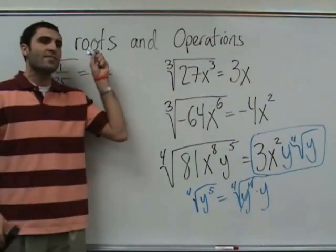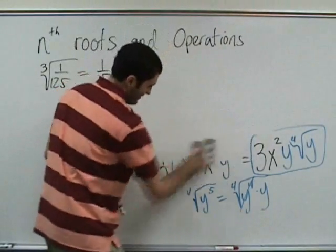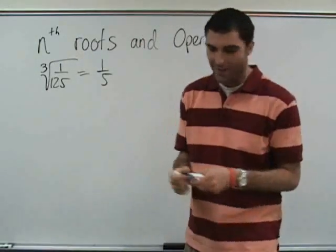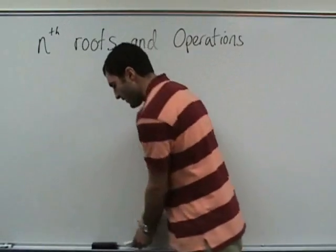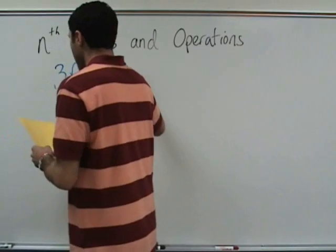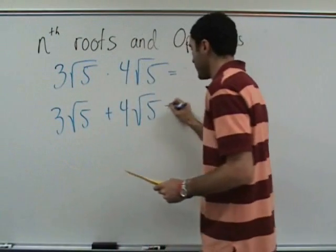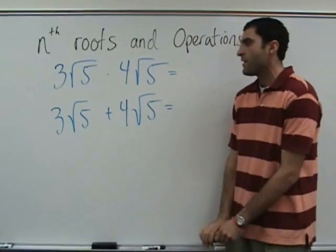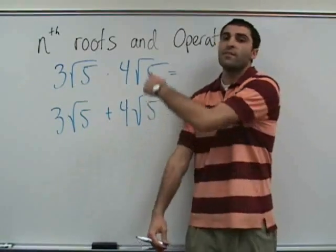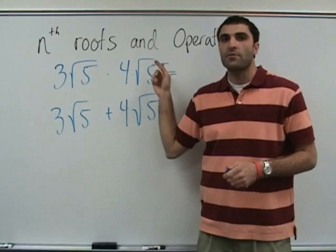We're going to go over one more thing. We've done nth roots. Next is operations. Here's the rule — I'm going to write this down. If you know this rule, you know how to do all the nth root operations. It's crucial. That's 4 times the square root of 5, and then 3 square root of 5. When you multiply square roots or radicals, what happens?